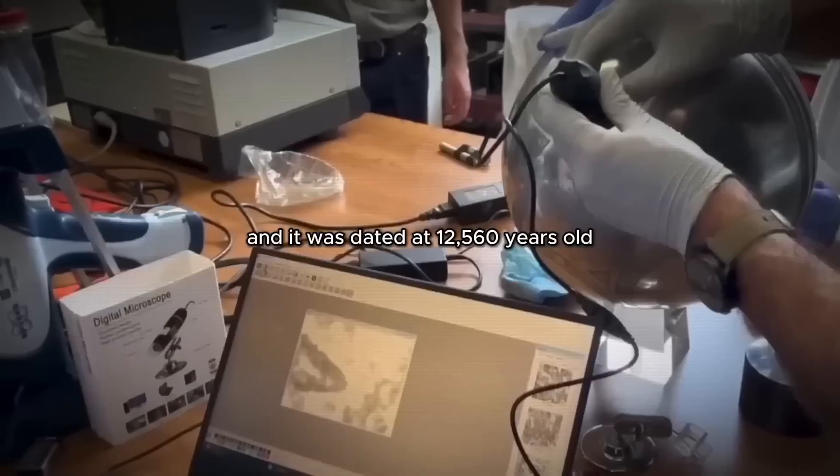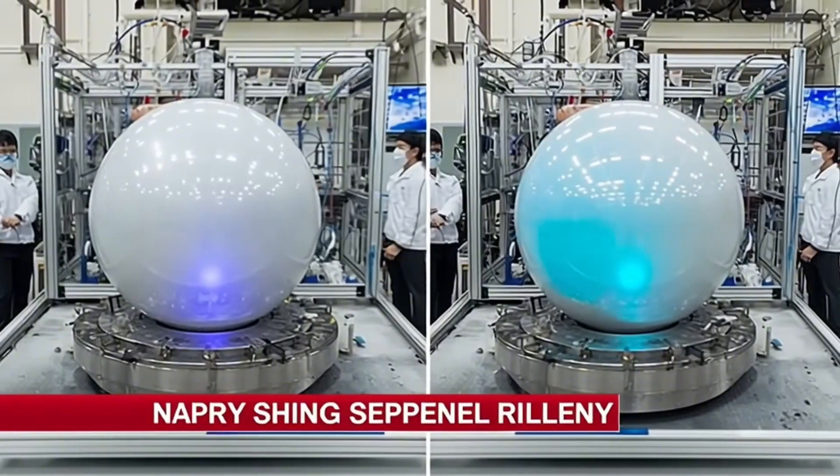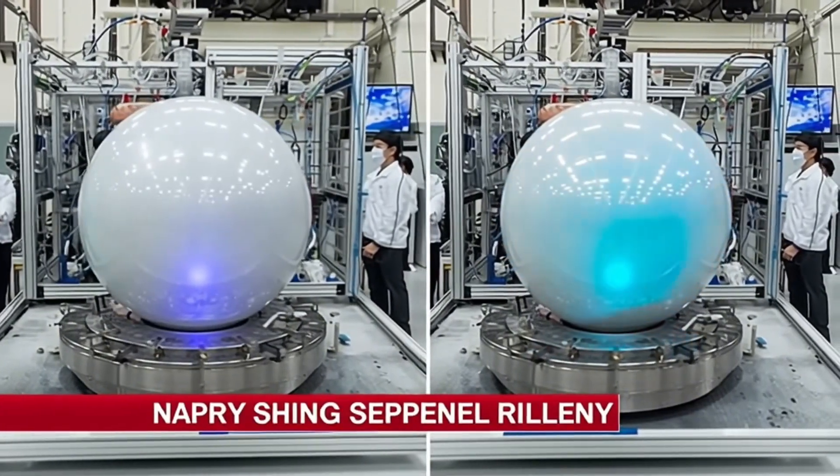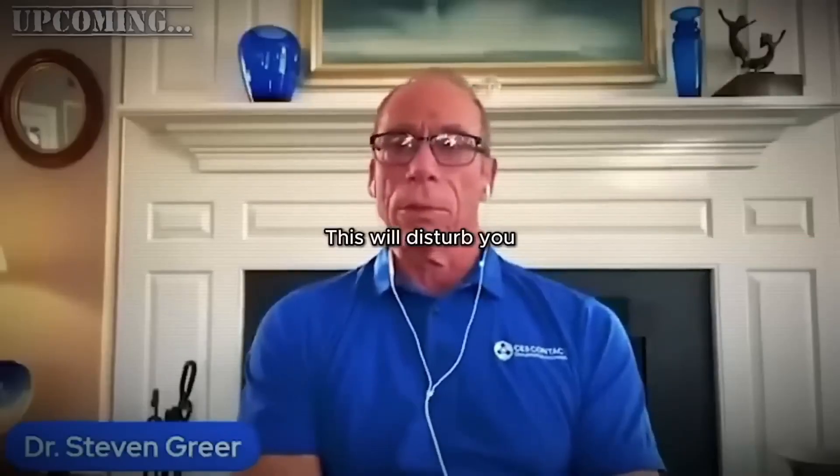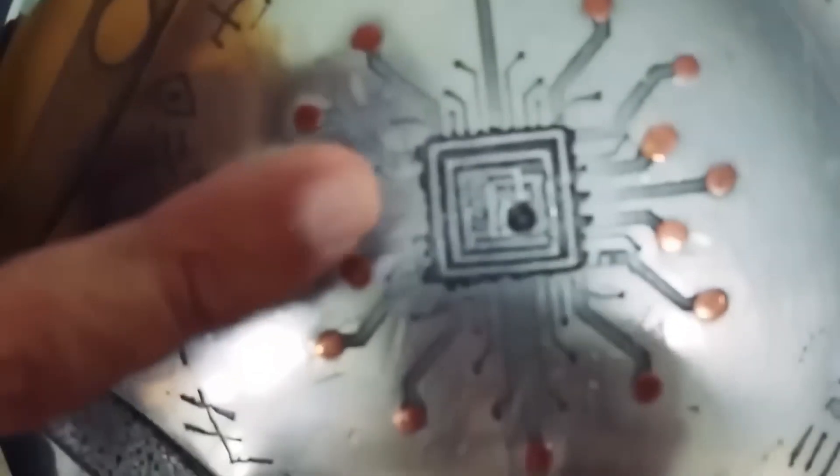The metallic layers, trace elements, and rare-earth signatures fit the profile of terrestrial manufacturing from the 1970s through the 1990s. Four independent confirmations reinforced this conclusion. The titanium-aluminum blend, isotopic match, and absence of cosmic ray spallation all suggested a human-made object, likely crafted during the golden era of space exploration.